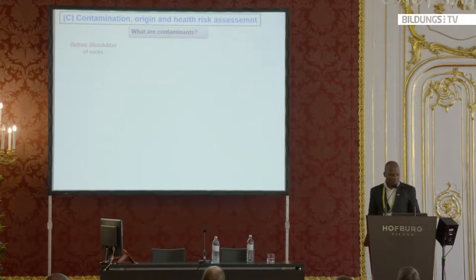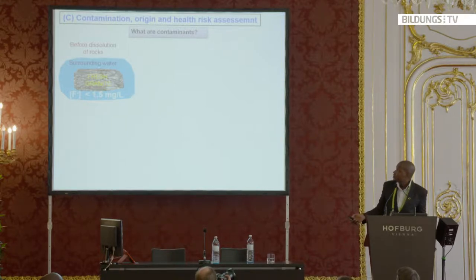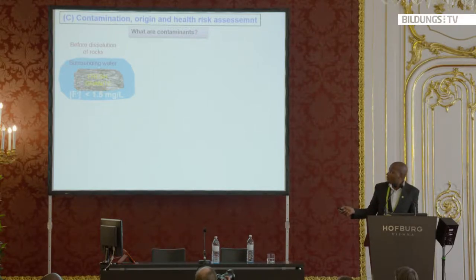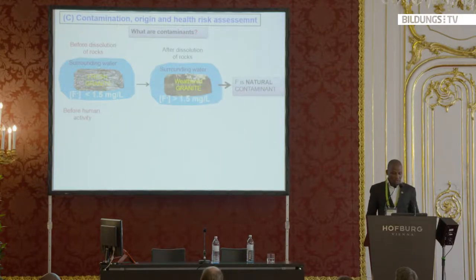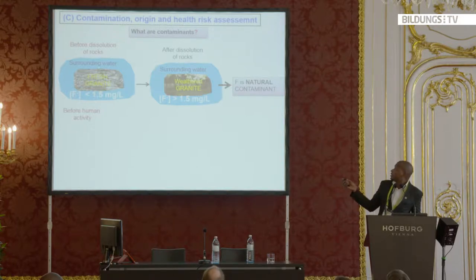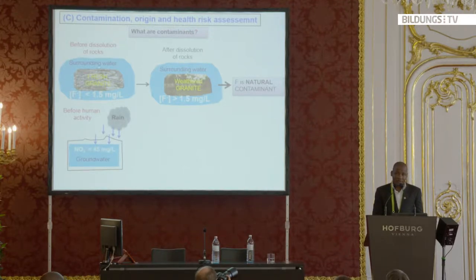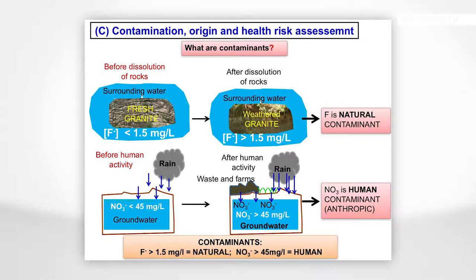How is the behavior of these contaminants? Before dissolution of rocks, the fresh granite and surrounding water show fluoride of less than 1.5 mg/L — meaning the water is not contaminated. After dissolution, fluoride becomes greater than 1.5 mg/L, indicating natural contamination entering the water. For nitrates, before human activity, we expect nitrate values below 45 milligrams per liter, which is the WHO guideline. After human impact, nitrate values exceed 45 milligrams per liter.